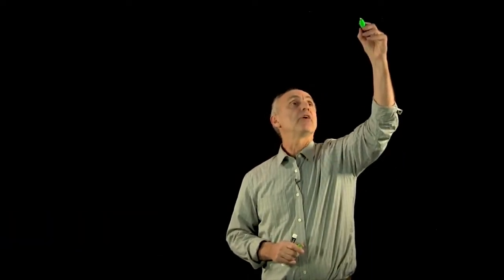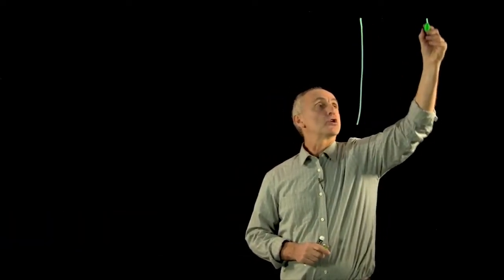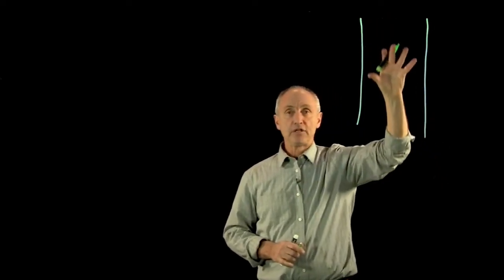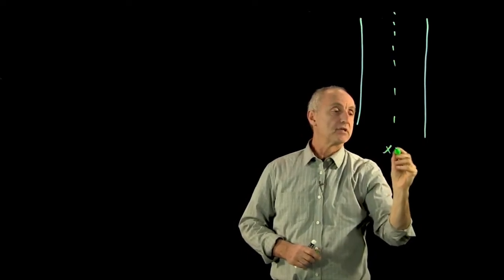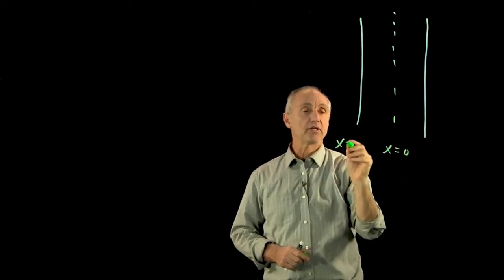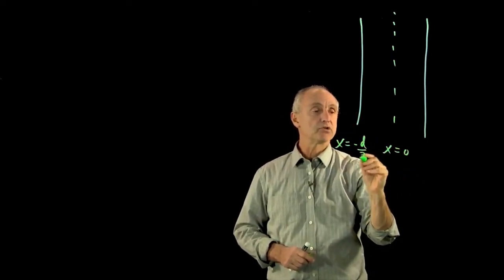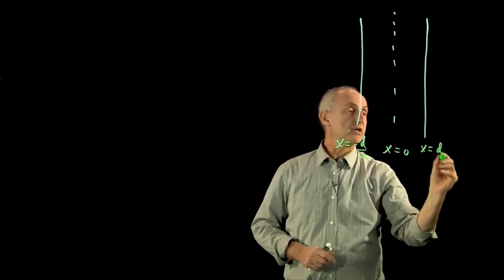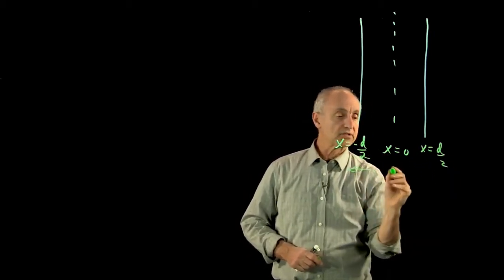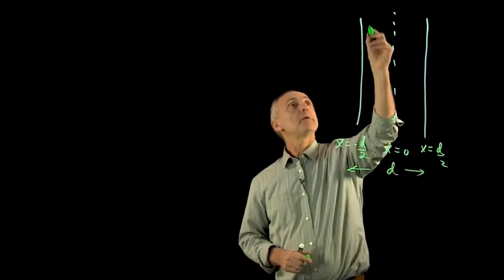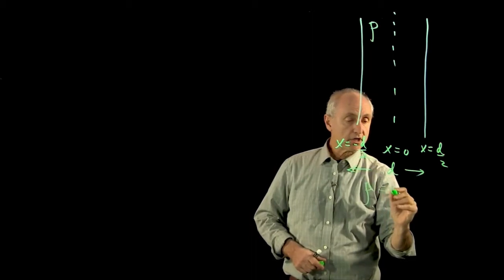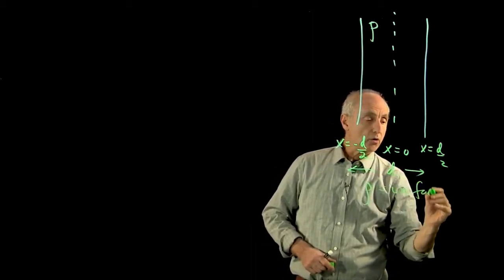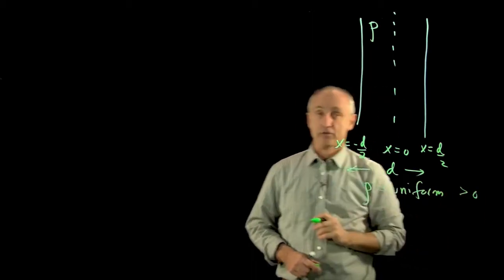The next type of source that has planar symmetry that we'd like to look at is a slab of charge. Now this is an infinite, semi-infinite slab of charge. I'll write down x equals 0 here in the middle. And this side is x minus d over 2, and we'll call this x d over 2. So the slab has size d, and this slab has a charge density rho. And for this particular example, we're going to consider the case where rho is uniform and positive.